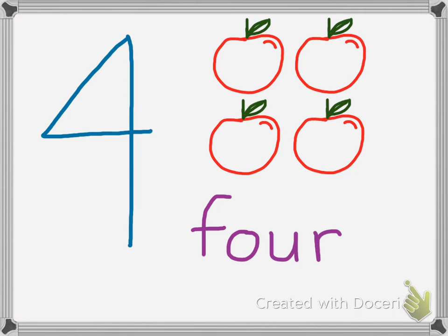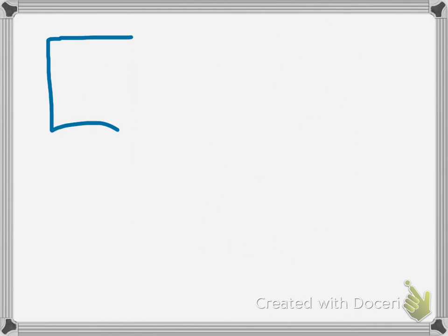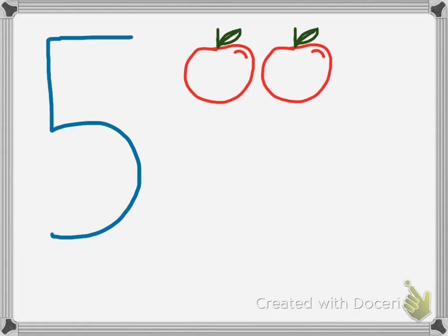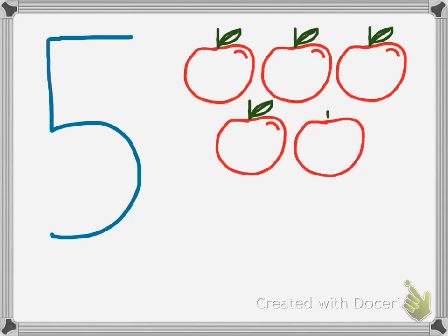And after 4, of course, comes number 5. So here we see 1, 2, 3, 4, 5 apples. That's 5. And we can see again the number 5 written in word form. So that's 5 apples. Yum, yum, yum.